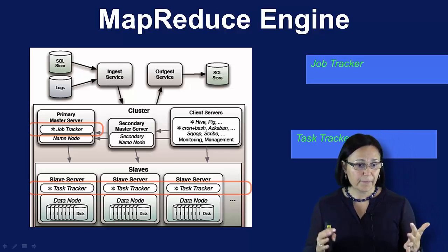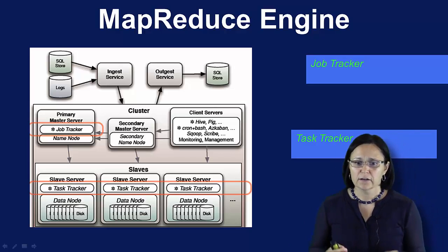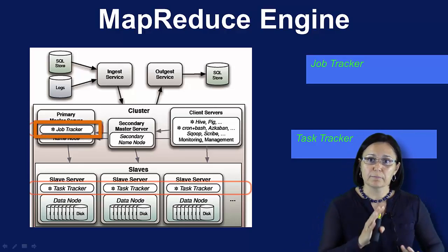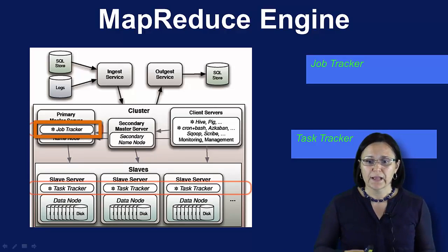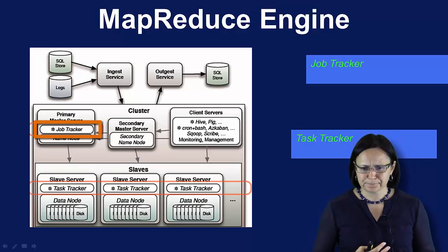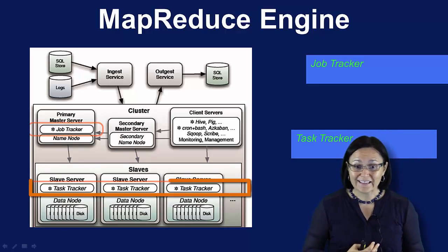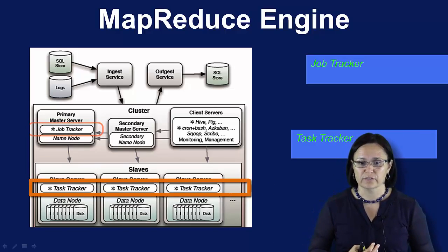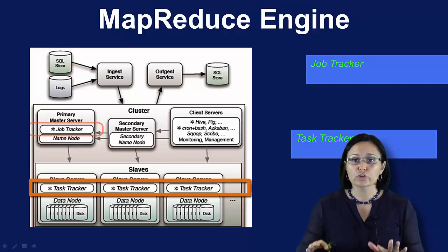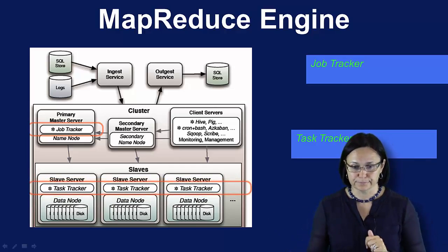The typical MapReduce engine will consist of a job tracker to which client applications can submit MapReduce jobs. This job tracker typically pushes work out to all the available task tracker nodes in the cluster, striving to keep the work as close to the data as possible and as balanced as possible.